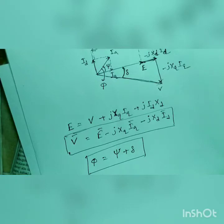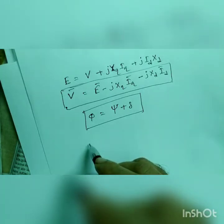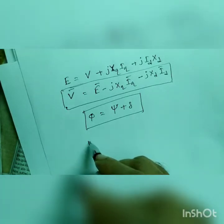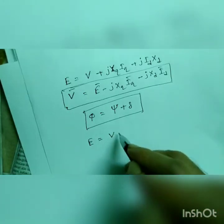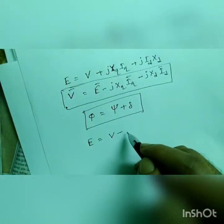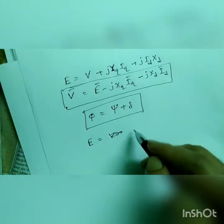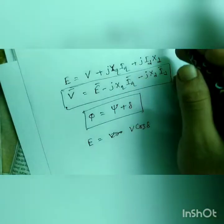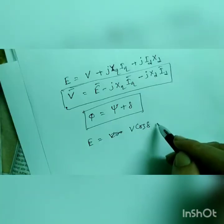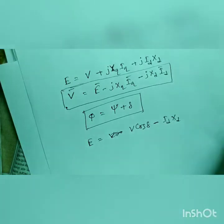So from here we can say that E is equal to, E is v minus, sorry, E is v cos delta plus, v cos delta minus idxd.